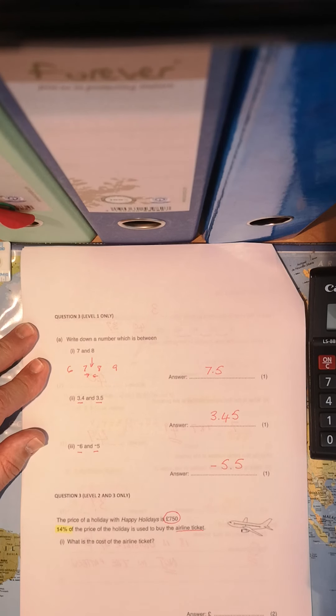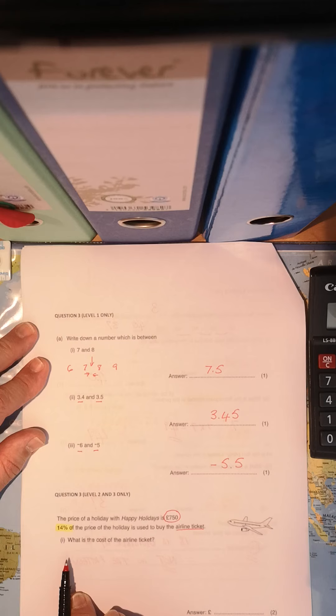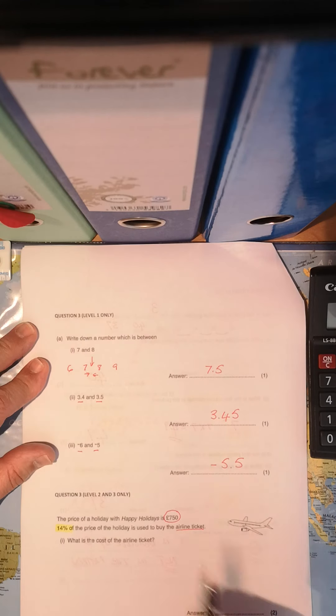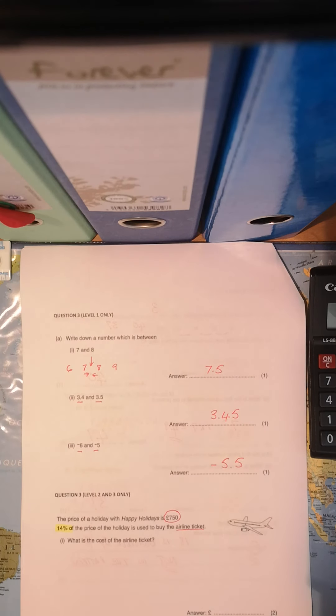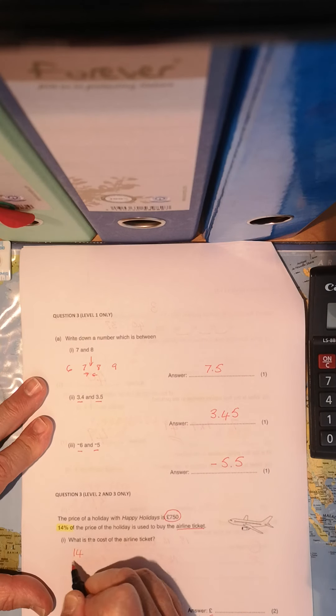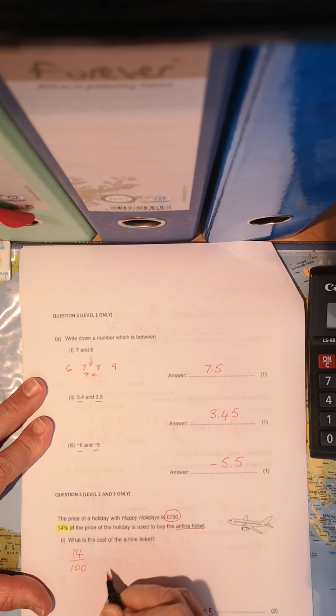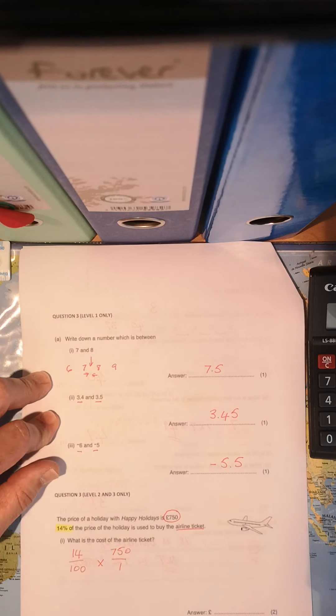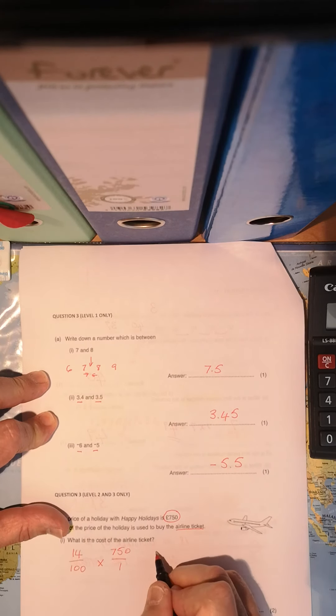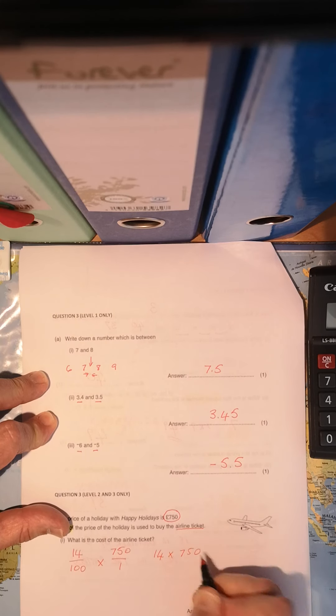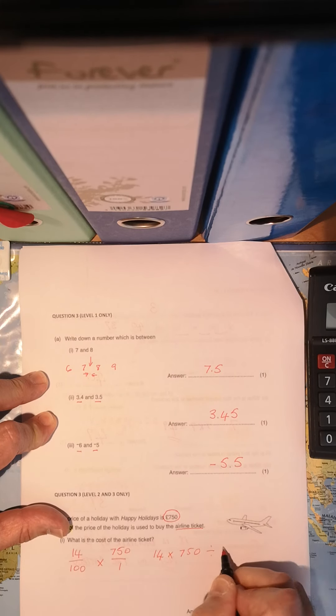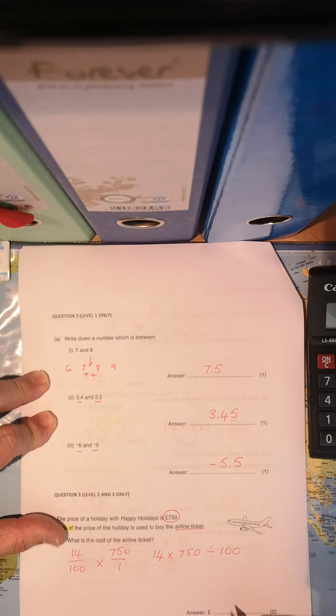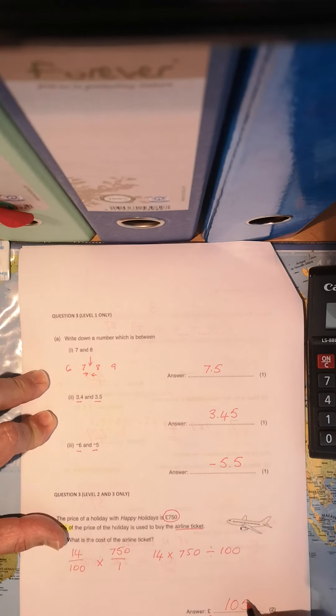Plenty of ways of doing this. You could have worked out 10% first, 1% times that by 4, and that would have given you your answer when you subtracted it from 750. But there's an easier way. Let's put the percentage 14% over 100% times that by 750 over 1 because that's the price. And you would have ended up saying 14 times 750 and then divided by 100, and that would have given you your answer of 105 pounds.